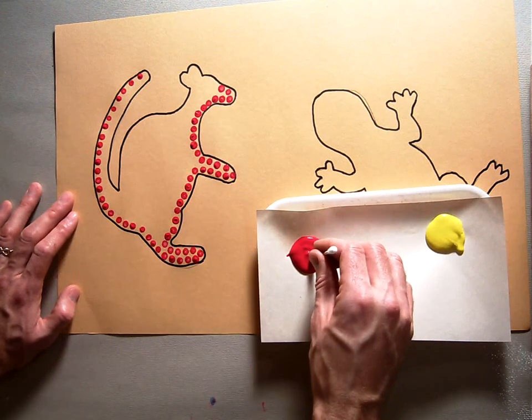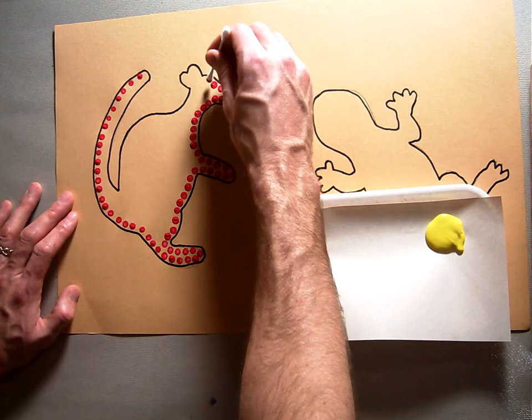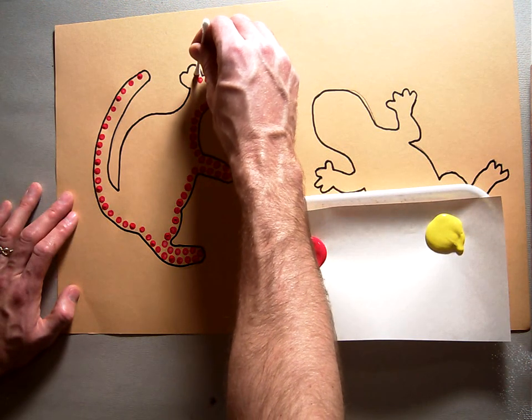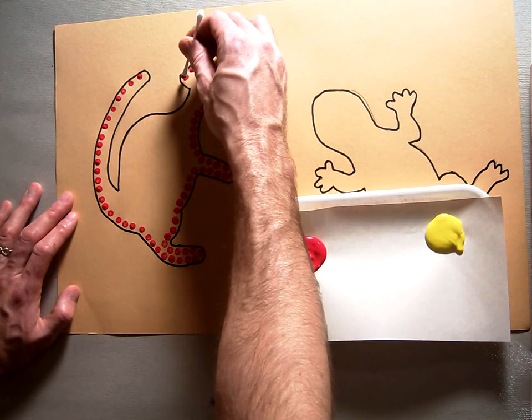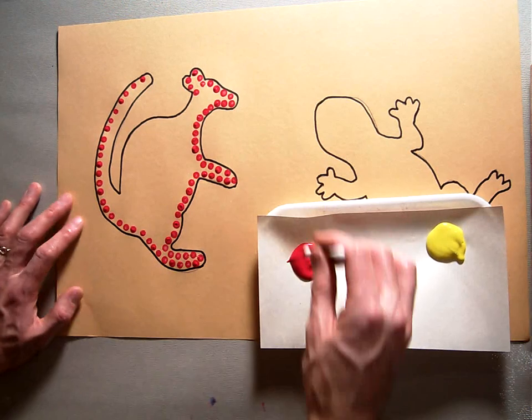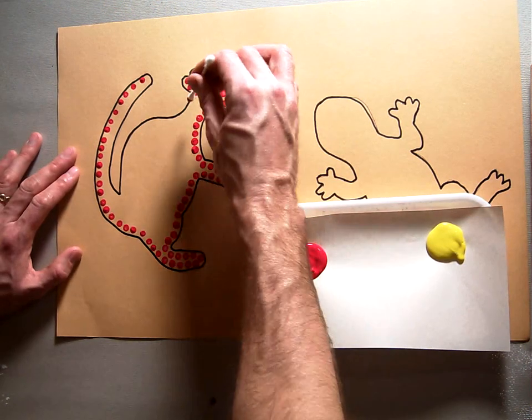Some places you might not be able to get close to it, like right there on the nose of my kangaroo. I couldn't fit one in there because there just wasn't enough room. And you'll have to make little artistic decisions like that of where to dot and where not to dot.